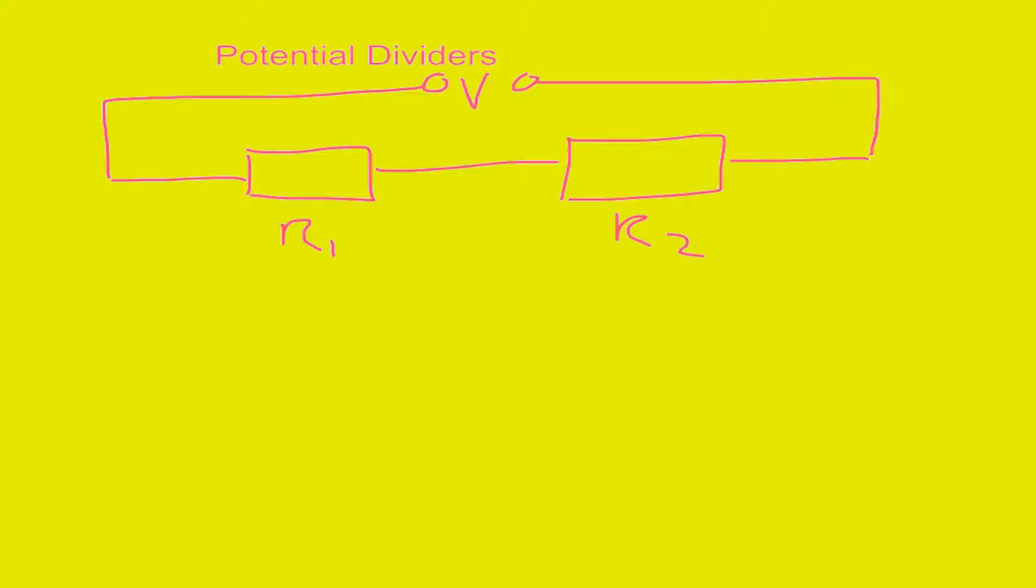One thing we can say, because they're in series, is the current I going through each of them is constant. It's a series circuit, so the current going through both resistors is the same.